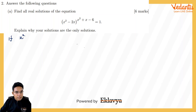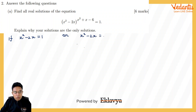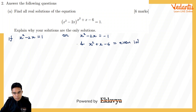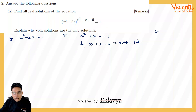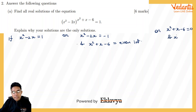The expression equals 1 if: first, x²-2x = 1; second, x²-2x = -1 and x²+x-6 is an even integer (so (-1)^even = 1); or third, x²+x-6 = 0 with the base not equal to 0, because if the base is also 0 then 0⁰ is not defined, not 1.